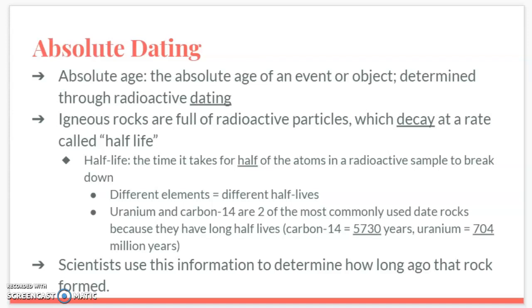Igneous rocks are full of radioactive particles which decay at a rate called half-life. Half-life is the time it takes for half of the atoms in a radioactive sample to break down. Different elements have different half-lives. Uranium and carbon-14 are two of the most commonly used elements to date rocks because they have very long half-lives. Carbon-14 has a half-life of 5,730 years. If half of the carbon-14 atoms in a rock sample have broken down, we know that sample is 5,730 years old.